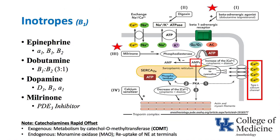Let's start on inotropes and look at the graphic on the far right, focusing on the red stars and red boxes. If you look at beta-adrenergic agonists, they work through the beta-1 receptor — in the case of inotropy — to mediate via G protein an increase in cyclic AMP inside the muscle of the heart. When cyclic AMP goes up, calcium comes in, and with increased calcium inside the myocardial cell, there is increased contraction of the heart.